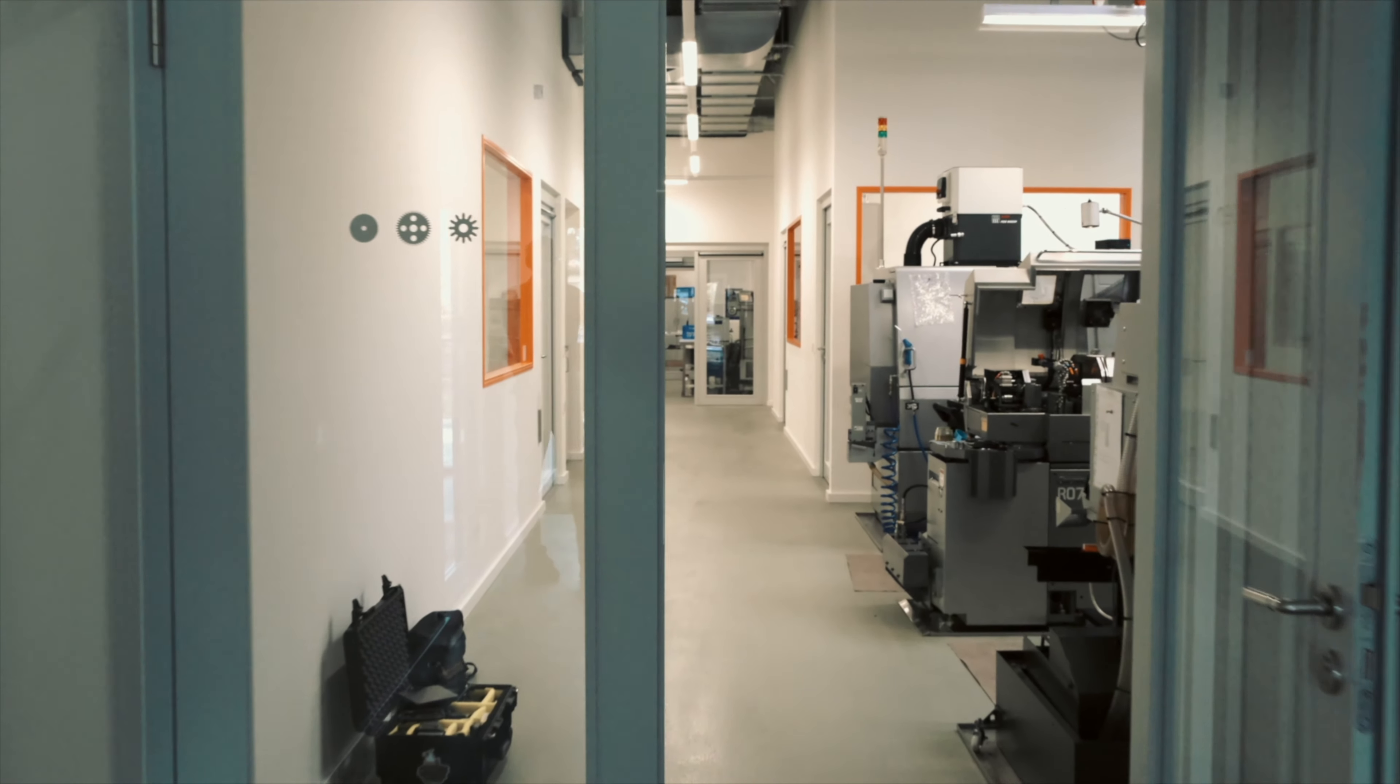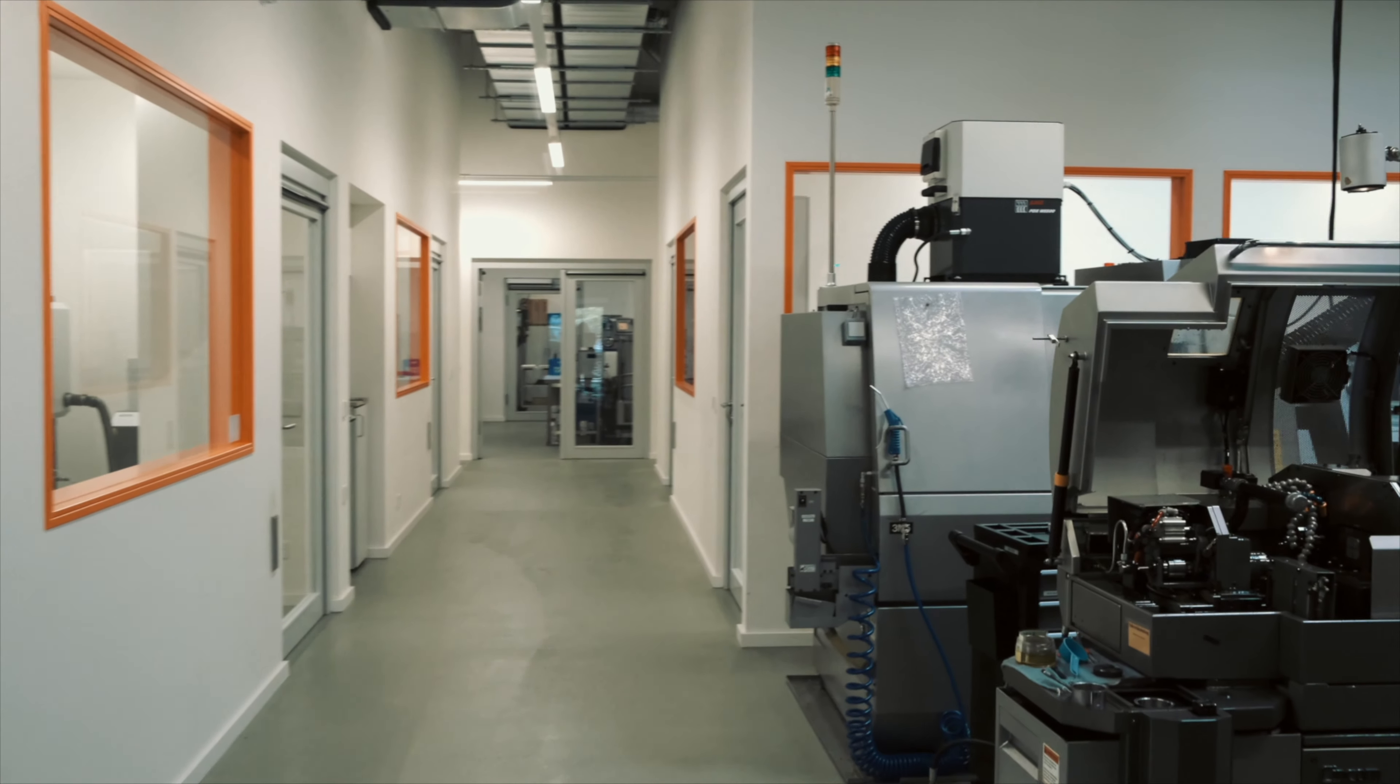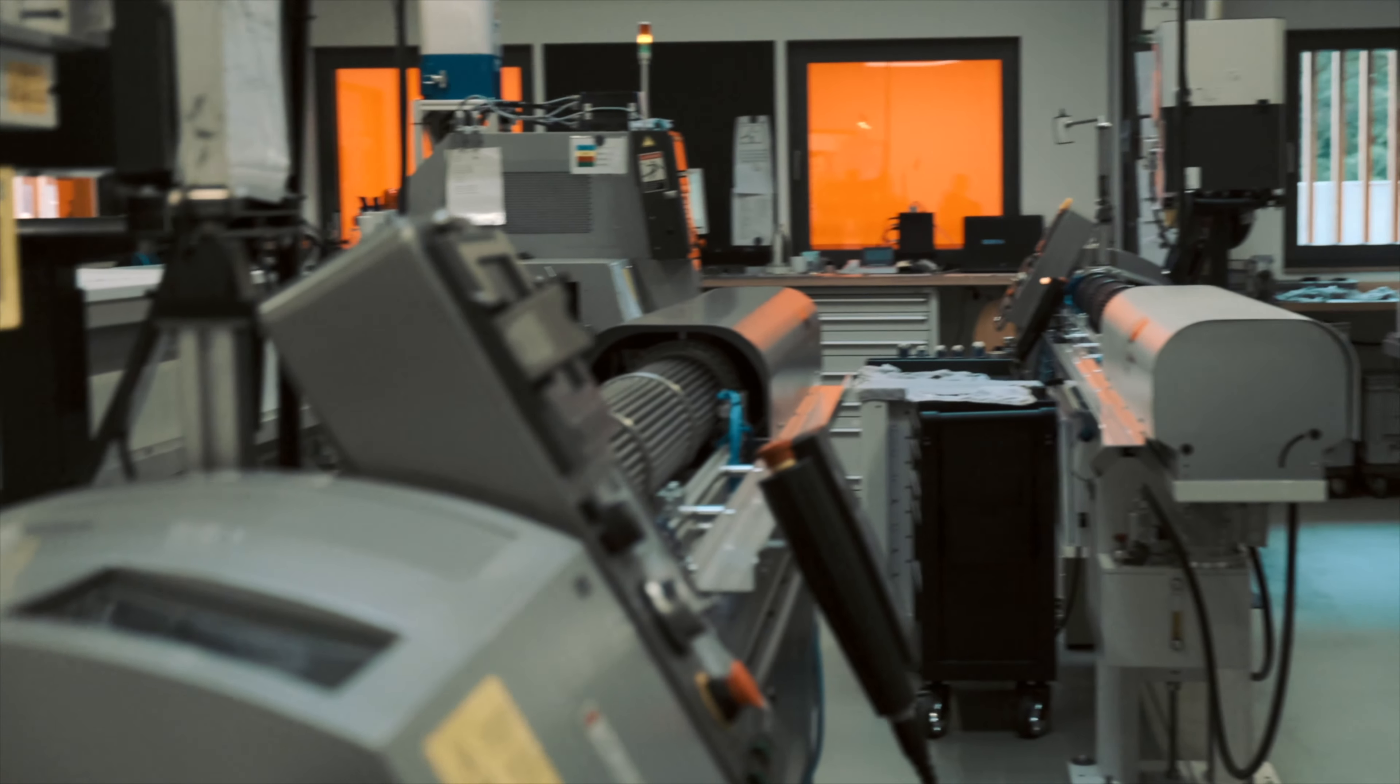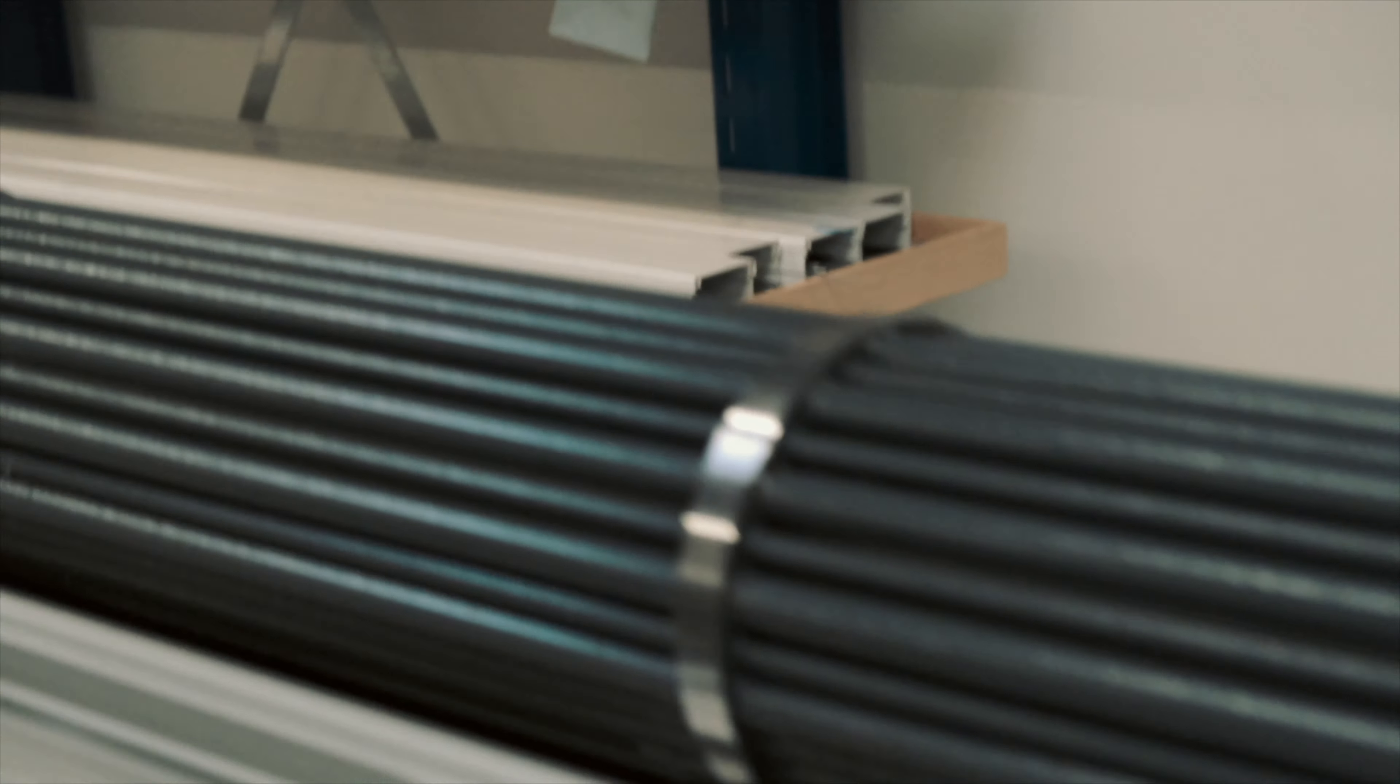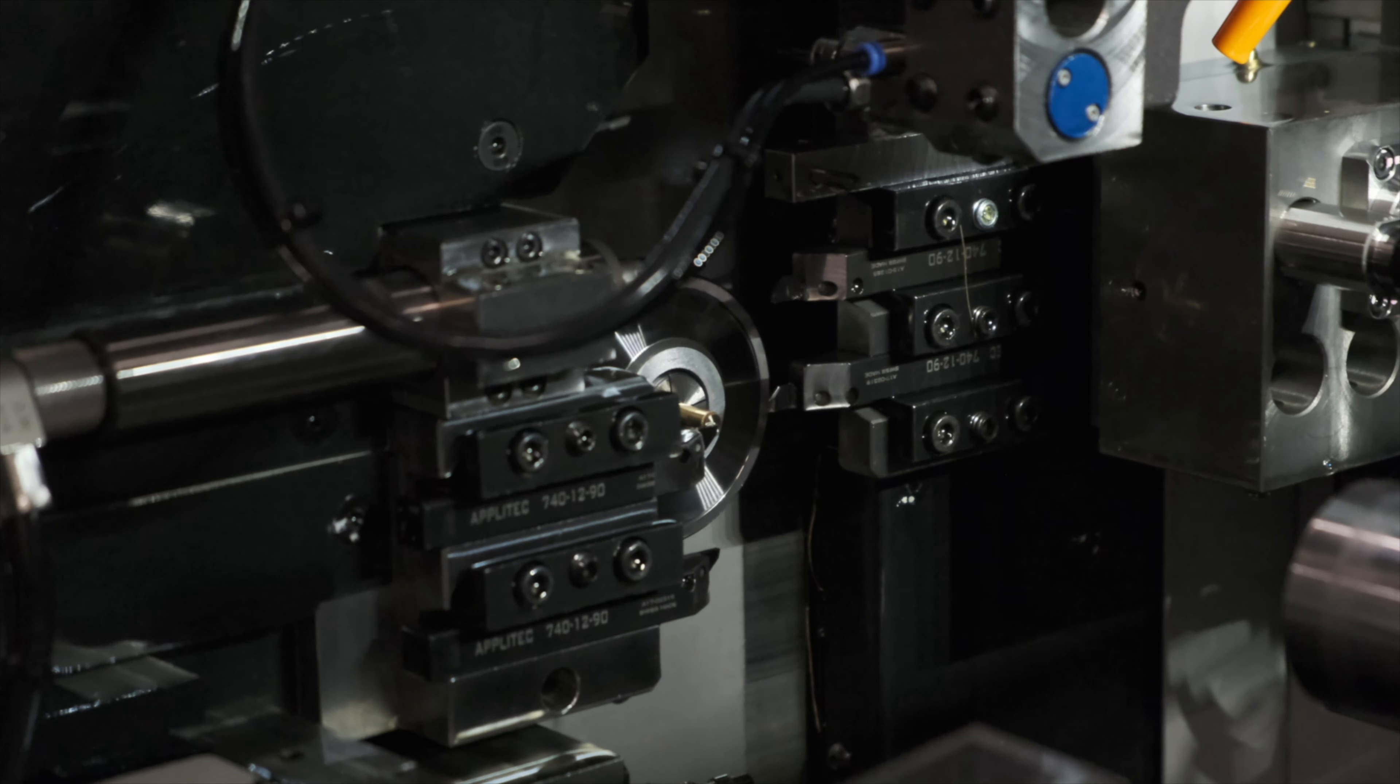We start our journey in the Nomos production hall in Glashütte. This is where the components that will eventually make up the various calibers are being produced. The production process blends high-tech with traditional handcraft for optimal results. In this room for example we see steel and brass rods being transformed into small movement parts. This is also where Nomos would work on its escapement.